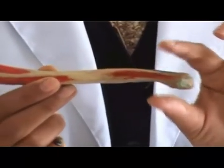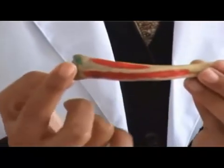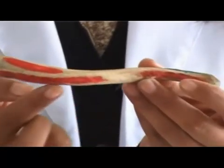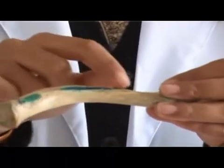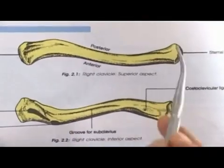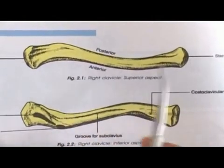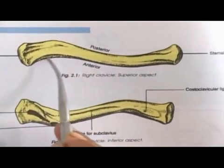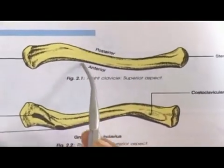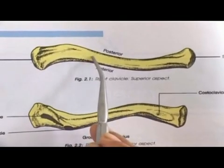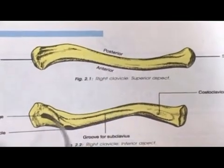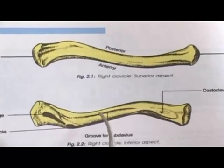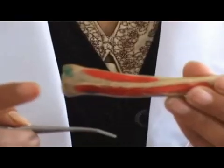The anterior surface is convex forwards. This figure shows the superior view. The shaft is convex anteriorly in the medial two-third and concave anteriorly in the lateral one-third. The junction is a weak point where fractures commonly occur. The inferior surface in the middle one-third shows a shallow groove called the subclavian groove.